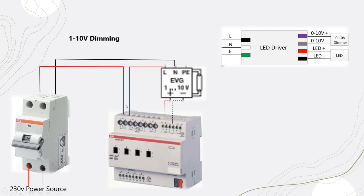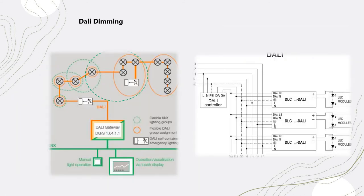The reason we pull the live cable from the 0-to-10V dimmer actuator is to control the lighting switching — on and off — while the dimming is controlled through the 0-to-10V signal channel. It's somewhat similar to DALI but the key difference in DALI is that every light has an individual address, unlike phase dimming and 0-to-10V dimming.